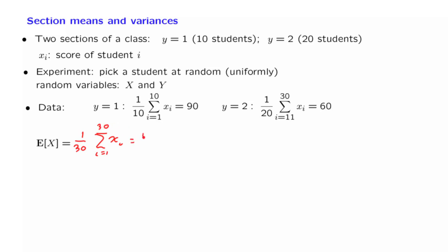What is this number? Well, we need to calculate the sum of the x_i's. The sum of the first 10 x_i's is equal to 90 times 10, and the sum of the x_i's in the other section is equal to 60 times 20. And we carry out the calculation and we find that the answer is 70.